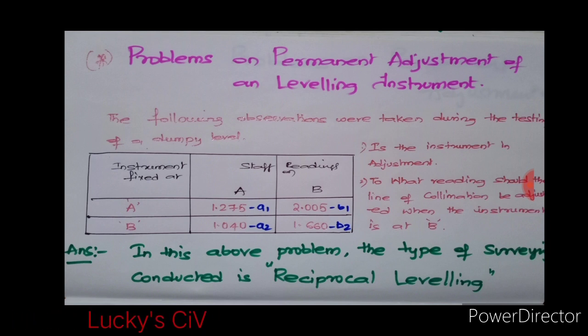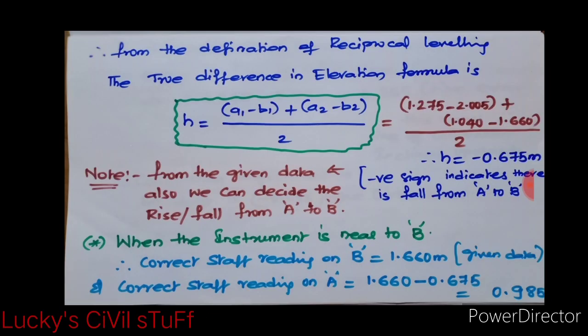The solution is as follows. First of all, based upon the given data, the instrument is once set up at A and once set up at B, near to A and near to B. By this we can say that the type of surveying conducted here is reciprocal leveling.